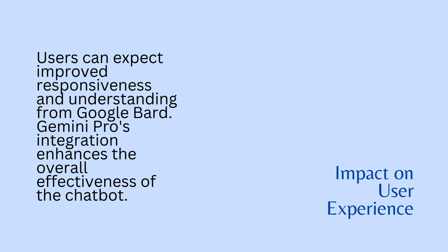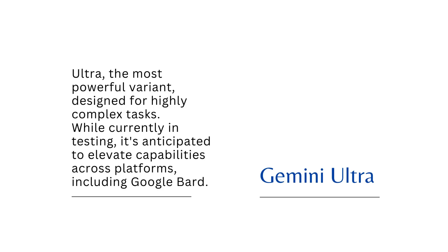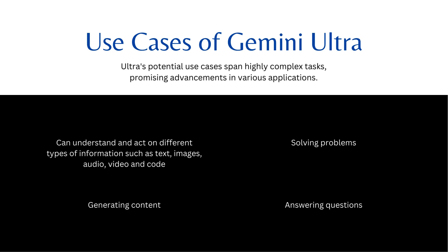Let's talk about the third version, Gemini Ultra. Ultra is the most powerful variant, designed for highly complex tasks. This version is currently in testing and is anticipated to elevate capabilities across platforms including Google BARD. Gemini Ultra helps solve problems, answer questions, generate content, and can understand and act on different types of information such as text, images, audio, video, and code.